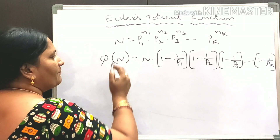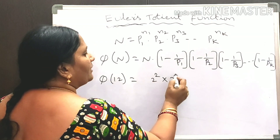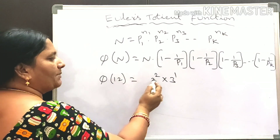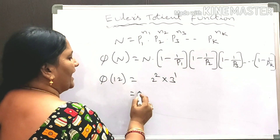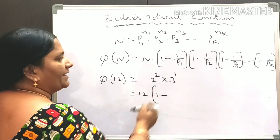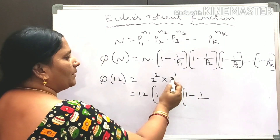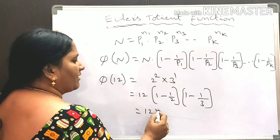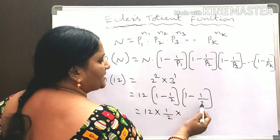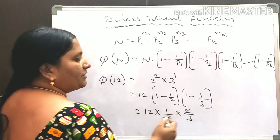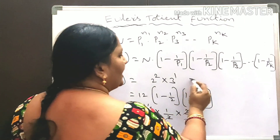Let us take the number 12. Phi of 12: 12 can be written as 2² × 3¹. Applying the formula: phi of 12 = 12 × (1 − 1/2) × (1 − 1/3). After simplification: 12 × (1/2) × (2/3). The 2s cancel and 3 divides 12 four times, so the Euler-Totient function for 12 is equal to 4.